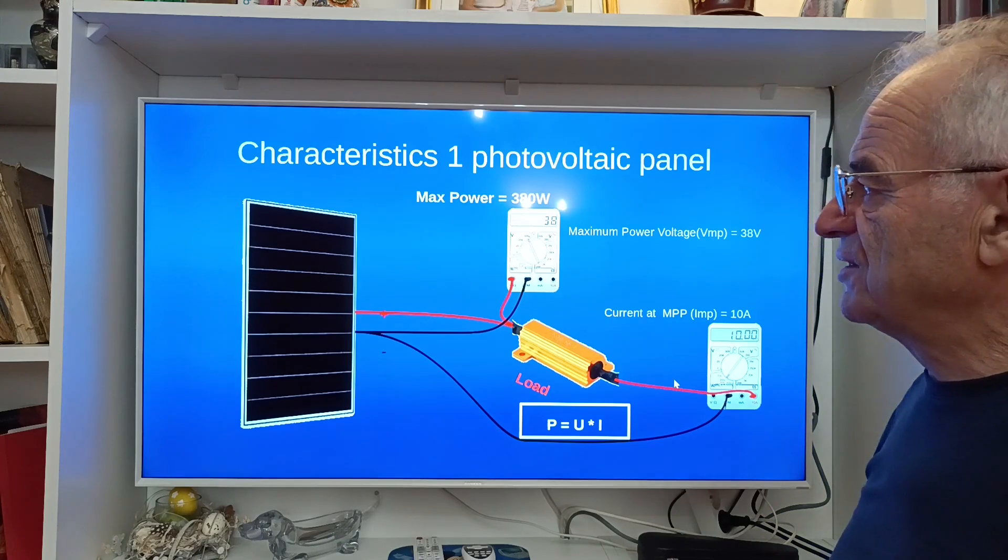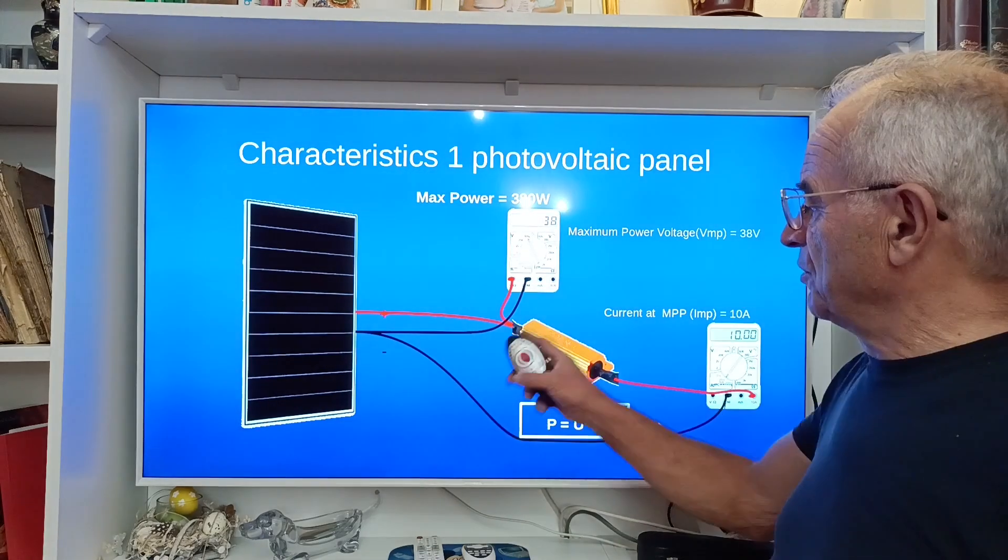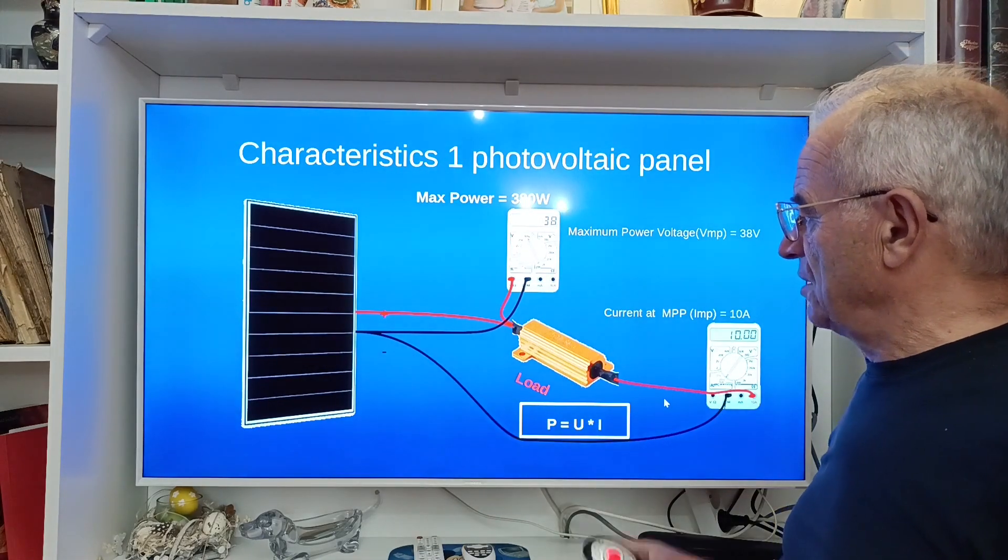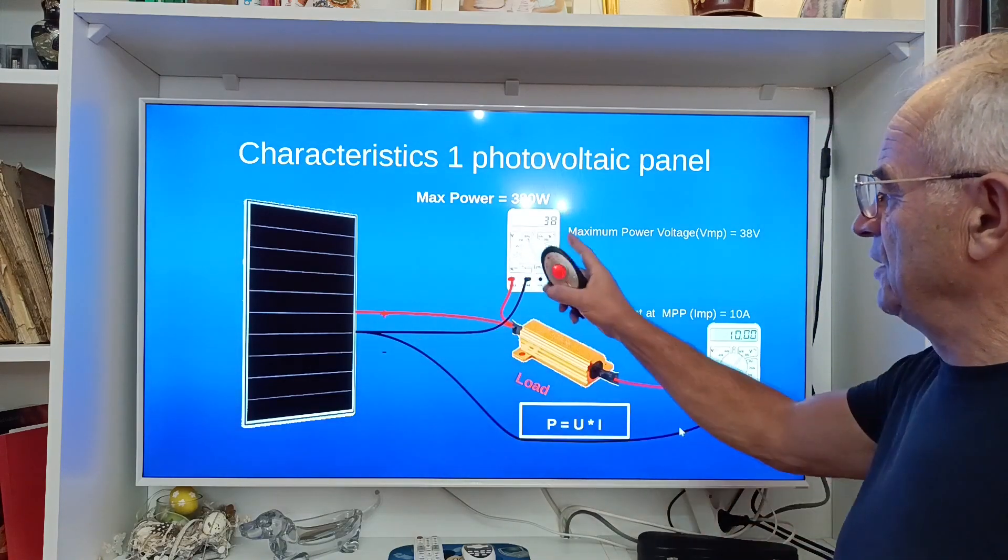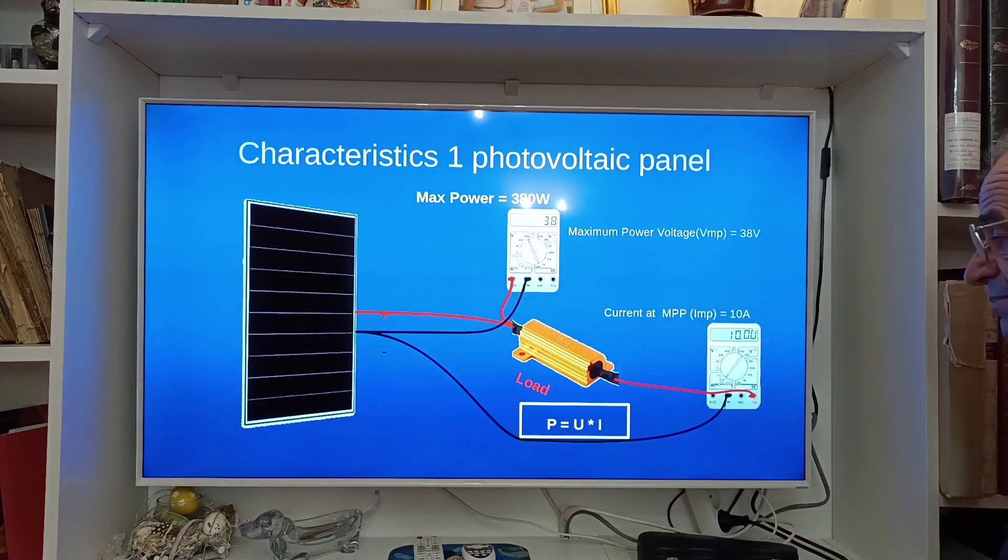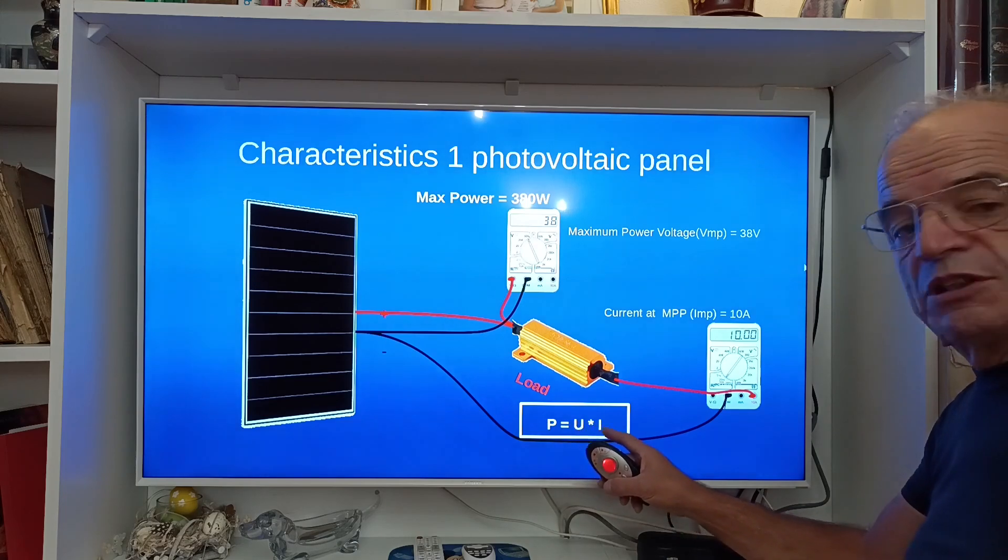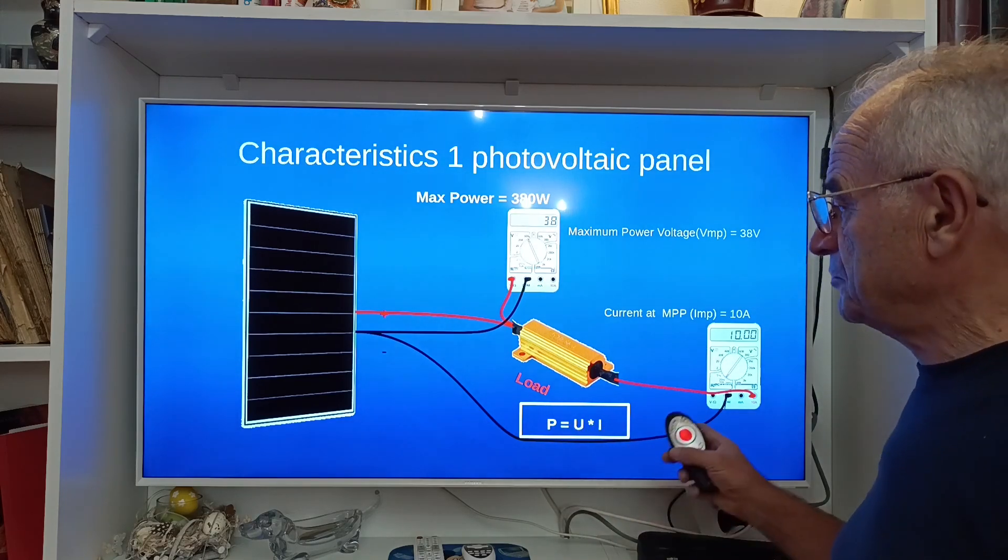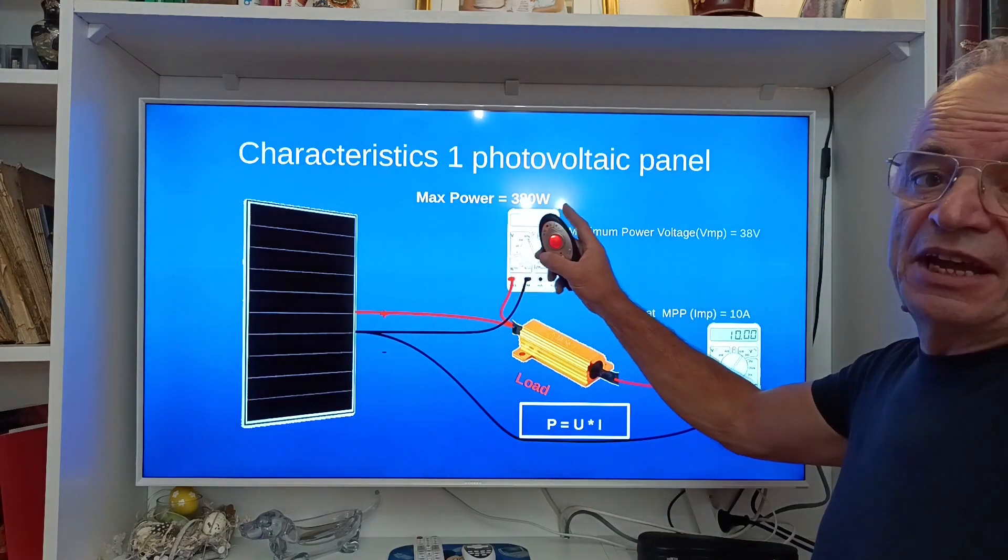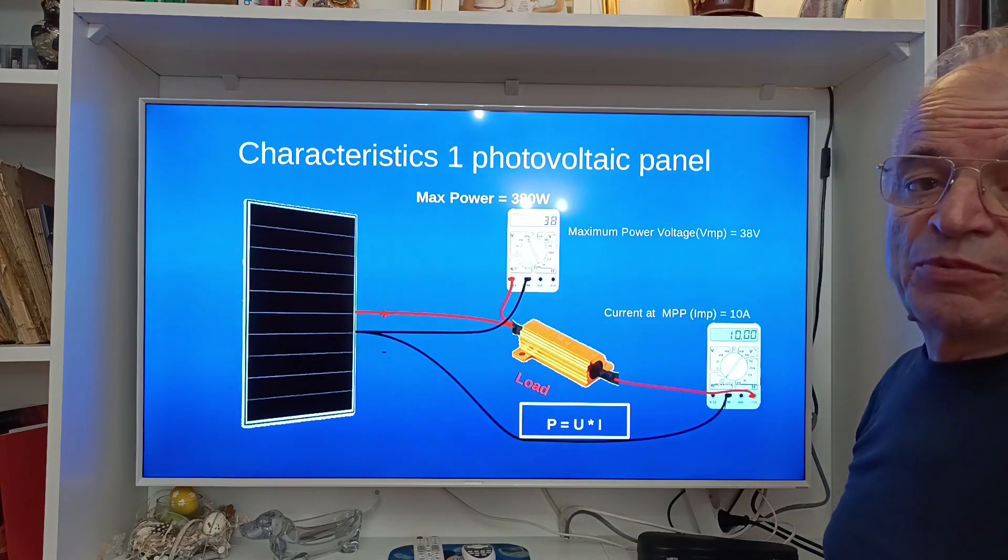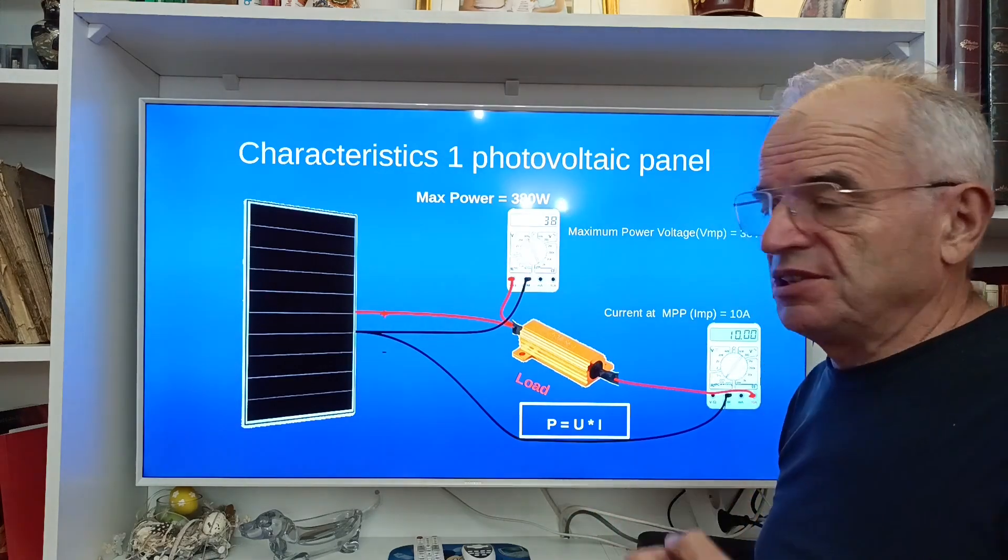Now we will see the characteristic of this panel in terms of maximum power we can extract. Put a load on this panel, we measure the voltage at the output about 38 volts and the current 10 amps. You know that the power generated is voltage multiplied by current. So here we have 38 volts, 10 amps, so a power of 380 watts. This corresponds mainly to the maximum power this panel can provide.